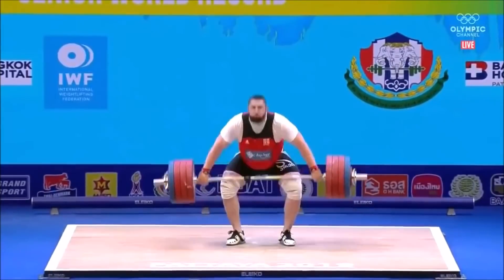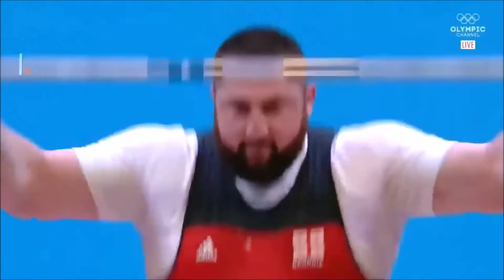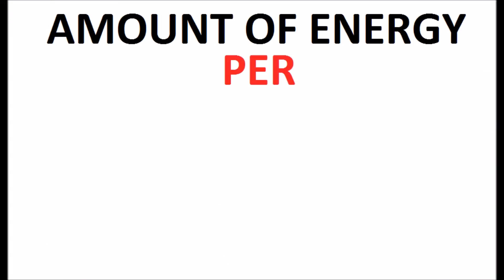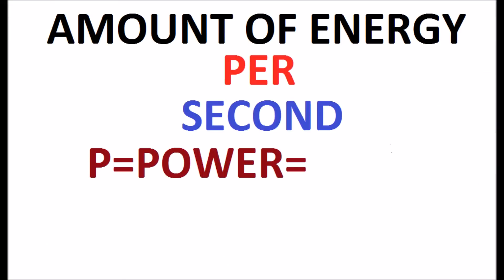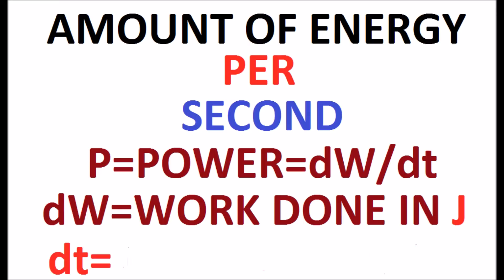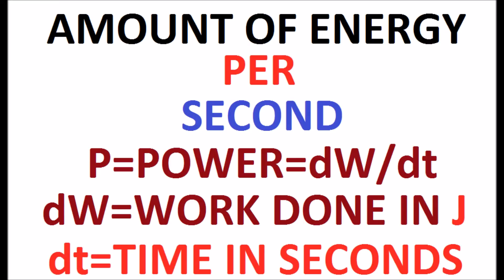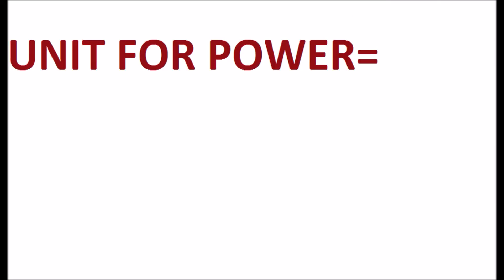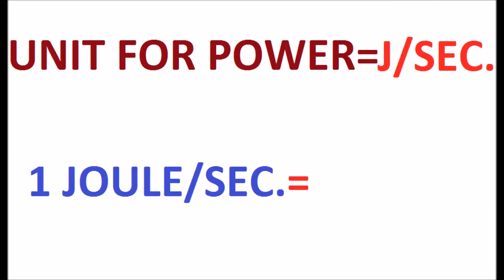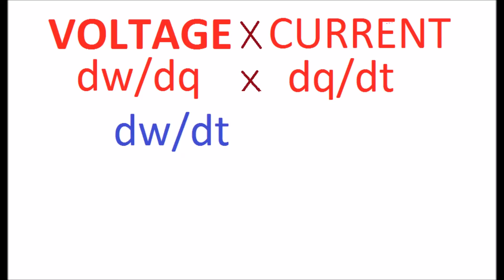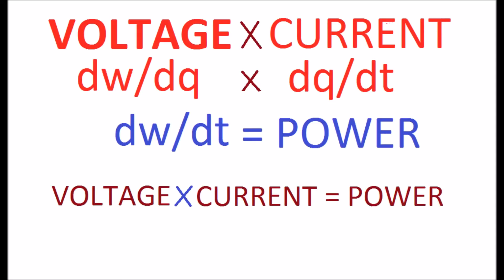Power is the capacity of doing work, meaning the amount of energy spent per second. P = dW/dT, where dW is work done in joules and dT is time in seconds. The unit for power is joules per second, which equals one watt. The product of voltage and current also equals power.